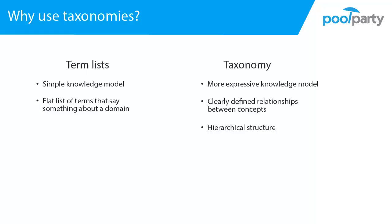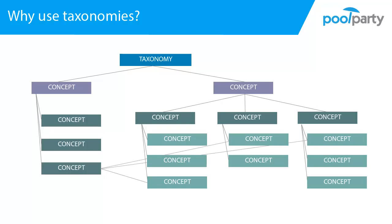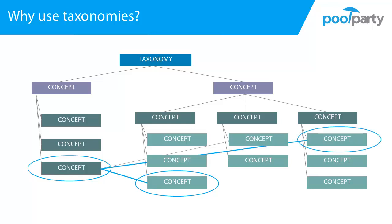Taxonomies are also very flexible — they grow with your needs. The more complex the information you want to model becomes, the more expressive your taxonomy can become. You can add additional types of relationships, such as associative relations, or even specify your own types of relations. One advantage is that along the hierarchy of a taxonomy, it is easy to aggregate information. Another advantage is that within a taxonomy, all concepts are embedded in a context, meaning additional information about a concept can be derived by following the concept's defined relations.